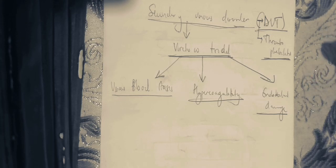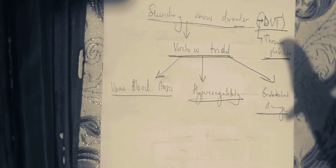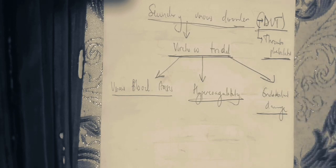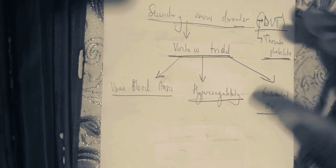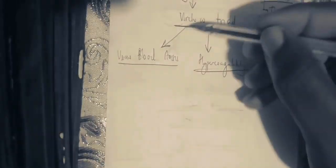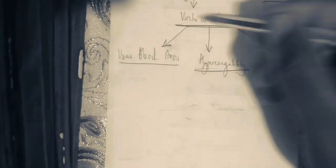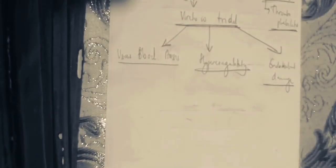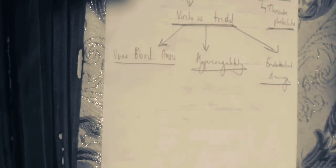Secondary venous disorder refers to anything that can result in deep venous thrombosis or thrombophlebitis. Primary venous disorder refers to anything that can result in varicose veins, as primary venous disorder is mostly associated with varicose veins. In the next tutorial, we are going to visualize Virchow's triad in detail, which is the major pathogenesis, and we will also look at the risk factors of deep venous thrombosis.